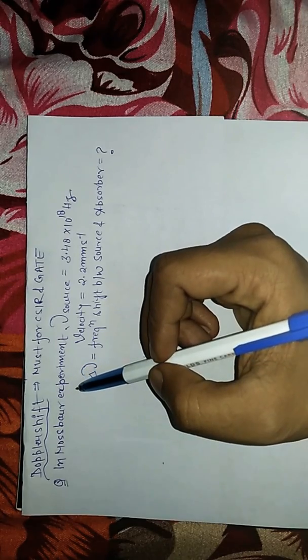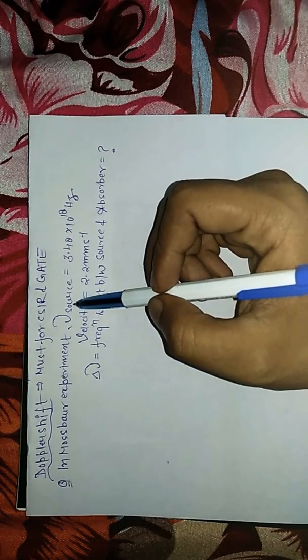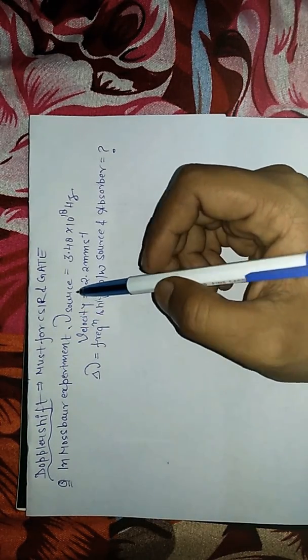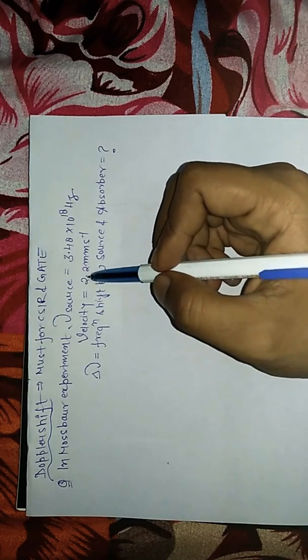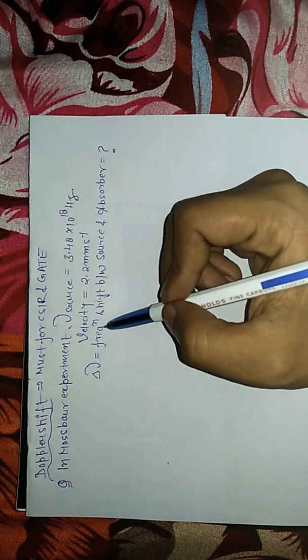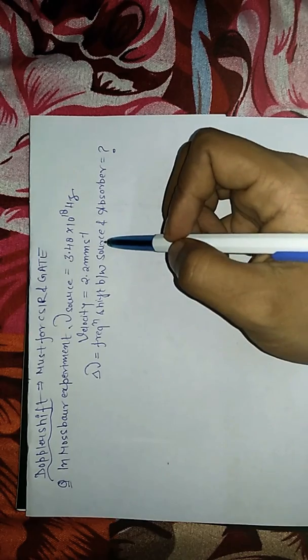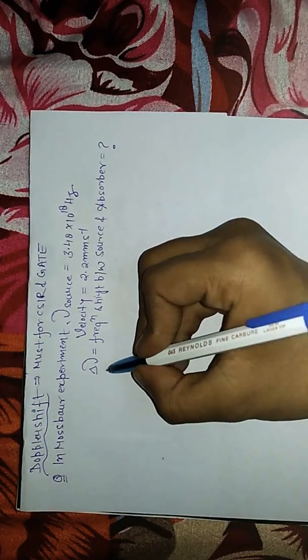Here in this question we are given the frequency of the source, that is cobalt-57, and velocity of the source is given. Now we have to calculate the frequency shift between source and the absorber. This is also known as Doppler shift.